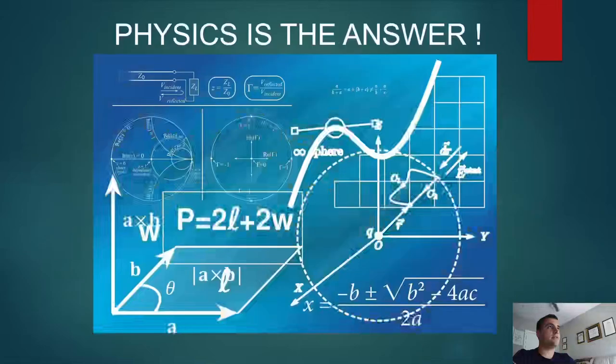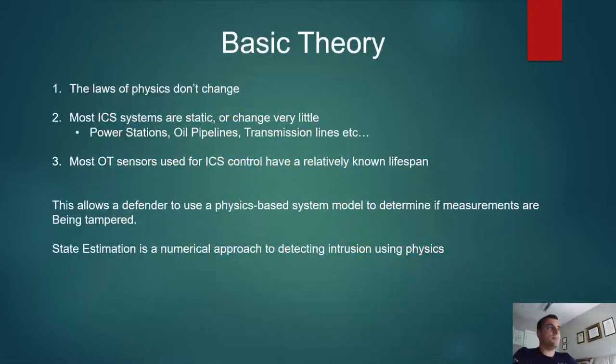Well, I think there is and it's physics. The basic idea behind it is that the laws of physics don't change and neither do most ICS systems. They're pretty much static. They change very little over time. Power systems, once they're set up, the actual physics behind how they work changes very little and often the systems themselves change very little. So it gives you as a security professional the opportunity to look more at a white listing model. In this case, it's kind of appropriate because a lot of these systems are very static. So state estimation, you can think of as sort of a numerical white listing model.